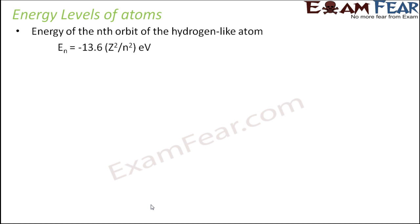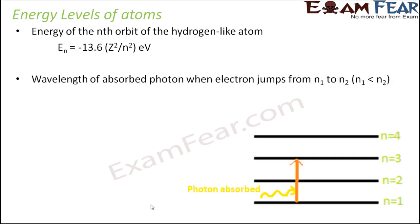This is how we calculate the energy of an electron in the nth orbit of a hydrogen-like atom. We can see that the energy depends on Z² and inversely depends on n². Now, what happens when the electron jumps from one energy level to another?